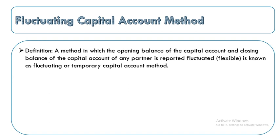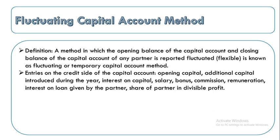At the end of the year, when we close the capital account, the status of capital at that time differs from the opening balance — that is why it is called the fluctuating capital account method. All transactions are recorded in a single account; no separate account is prepared for this purpose.